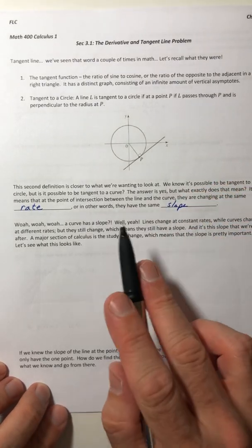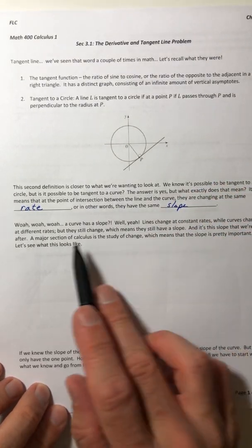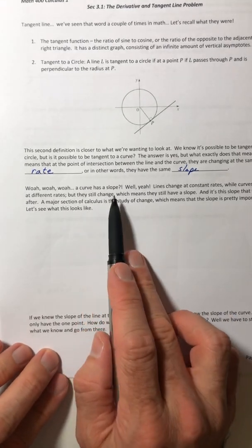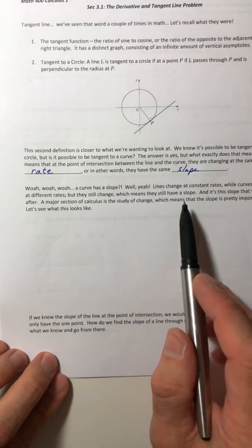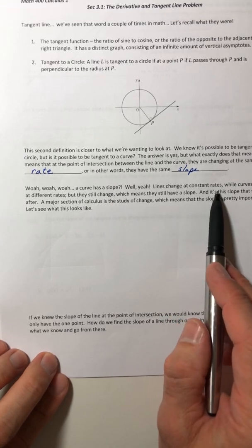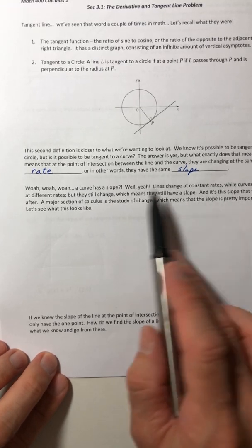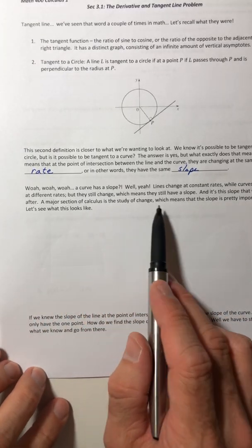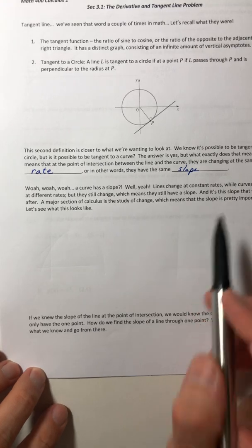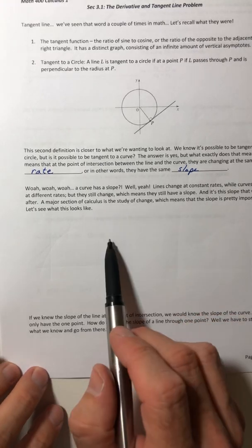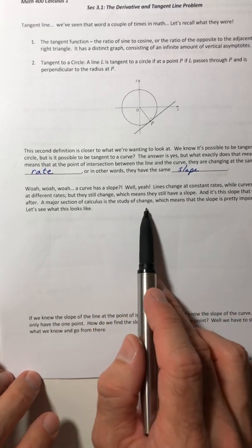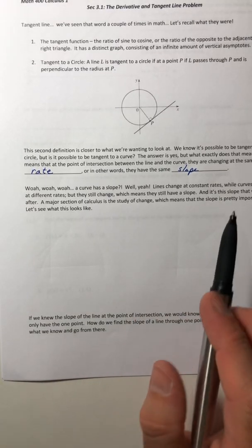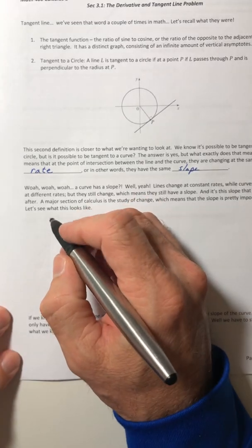So, the slope of the line and the slope of the curve are exactly the same, which is really weird because now it's like, wait, a curve has a slope? Well, yeah. Lines change at constant rates while curves change at different rates. That's why they curve around. But they still change, which means they still have a slope. And it's this slope that we're after. A major section of calculus is the study of change, which means that this slope is pretty important.